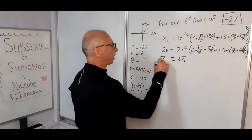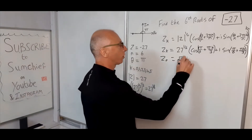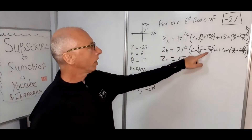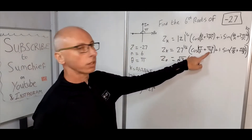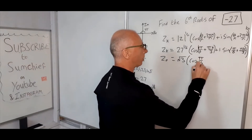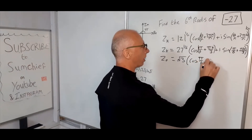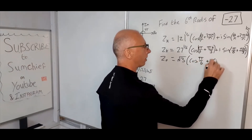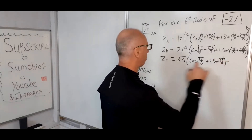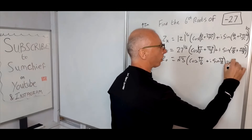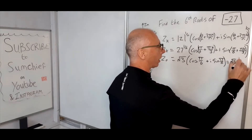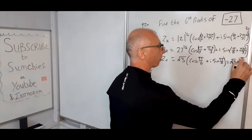For Z₀ (K = 0), the K term disappears. So we get root 3 times (cosine pi over 6 plus i sine pi over 6), which equals root 3 e to the i pi over 6.